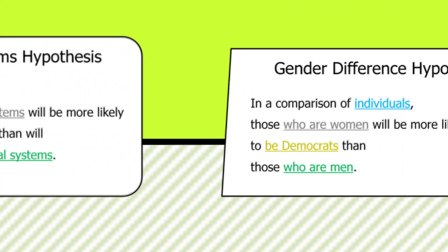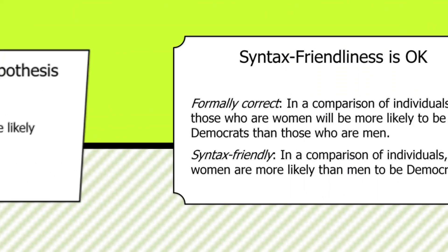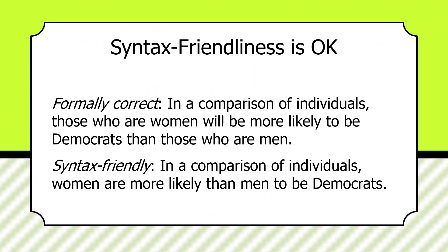In a comparison of individuals, those who are women will be more likely to be Democrats than those who are men. The two values of the independent variable — gender — are women and men, varying across one value of the dependent variable: the likelihood of being Democrats. The template may produce tortured syntax, so it's acceptable to rephrase to something more friendly to the ear, such as: women are more likely than men to be Democrats — same essence, same idea.